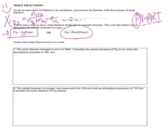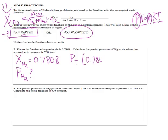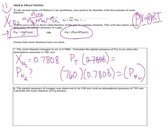Let's do number seven. It says the mole fraction of nitrogen in air is 0.7808. So we write: mole fraction subscript nitrogen equals 0.7808. Calculate the partial pressure. We're looking for the pressure of just the nitrogen. When the atmospheric pressure is 760 torr — that represents P_total. P_total times the mole fraction equals the partial pressure of nitrogen.